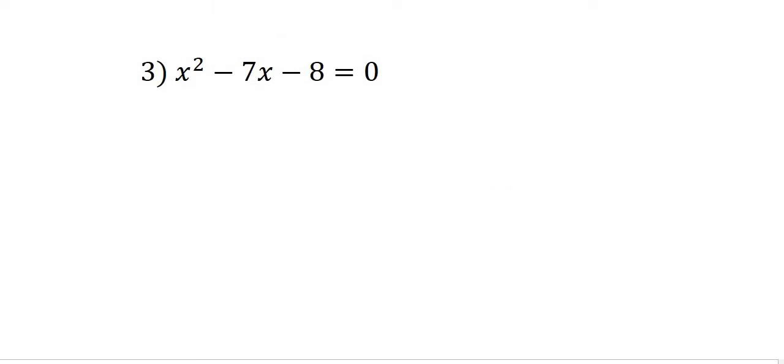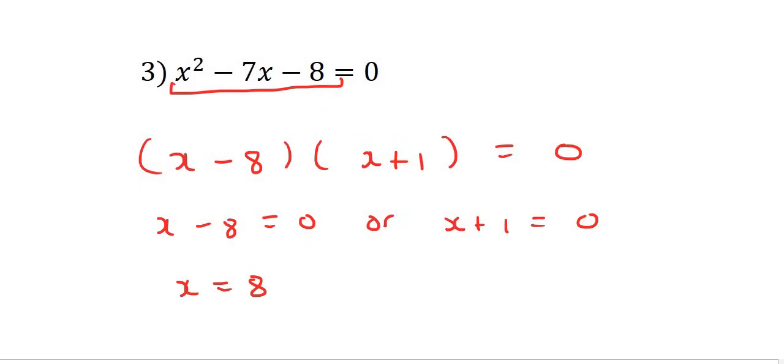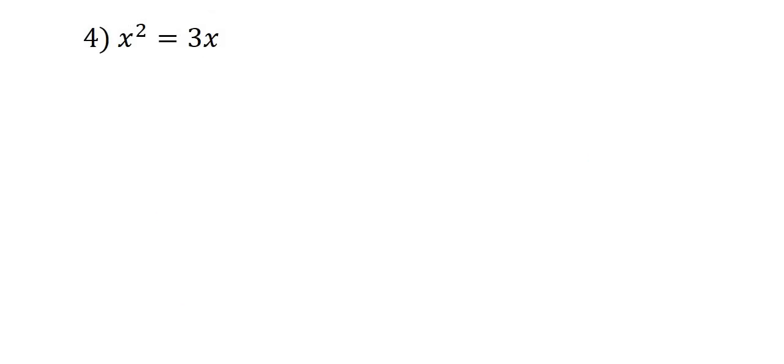In question 3, we've already got the 0, so then we can factorize. This over here is a trinomial, so we open up our two brackets, and we get x minus 8, x plus 1. We then say x minus 8 is equal to 0, or x plus 1 is equal to 0. This then means that x is equal to 8, or x is equal to negative 1.